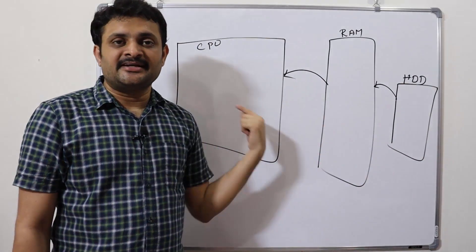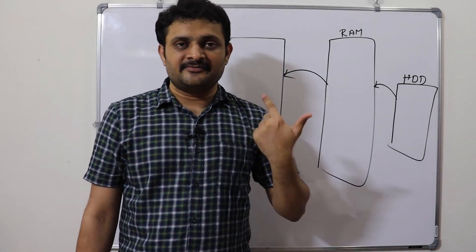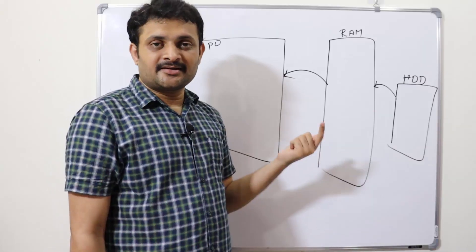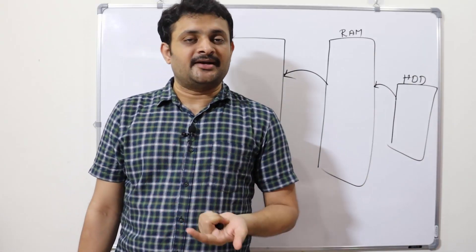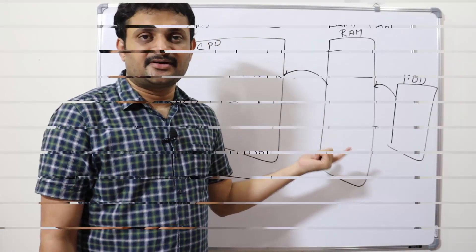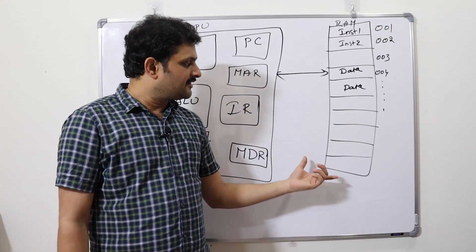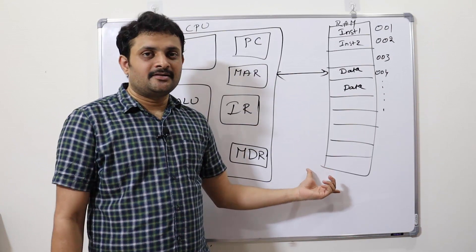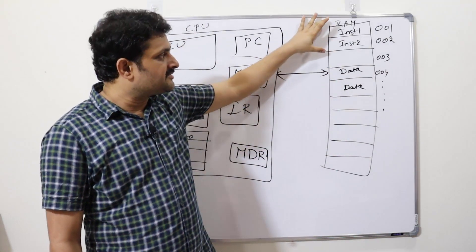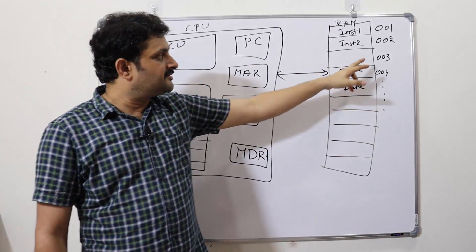Please try to remember this entire flow because it is really important. Without knowing the flow of operation, computer organization is really difficult to understand. Now let's look at the simple diagram. We have a RAM arranged as different cells, where some instructions and some data are stored.